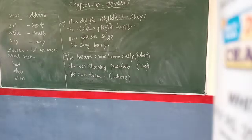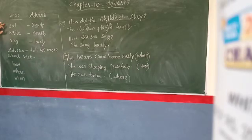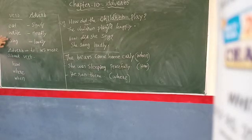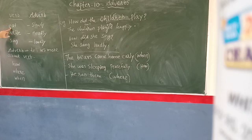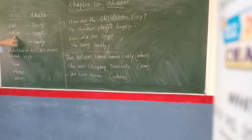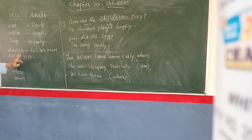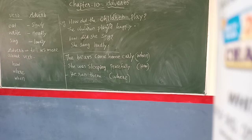First of all, think about the verb. Verb means the action verb — write, sing. It means how he walks slowly, how she writes neatly, how she sings loudly. Articles tell us more about the verb: how, where, when.